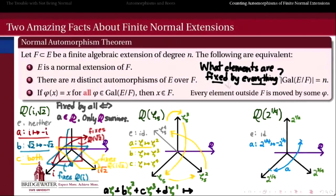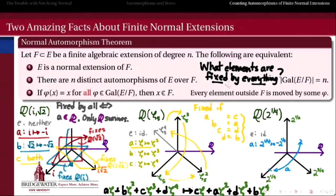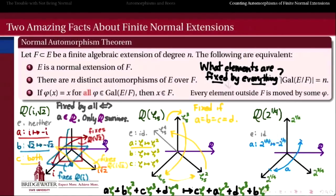The same story is true in the fifth cyclotomic field, though it's a bit more subtle. Automorphism A, which sends ζ to ζ², invokes a permutation of the entire basis ζ, ζ², ζ³, ζ⁴. It sends a generic element aζ + bζ² + cζ³ + dζ⁴ to cζ + aζ² + dζ³ + bζ⁴. For the element to remain fixed, we need a = c, b = a, c = d, and d = b. Solving this linear system forces a, b, c, and d to all be equal. So the elements fixed under automorphism A are those of the form a(ζ + ζ² + ζ³ + ζ⁴).